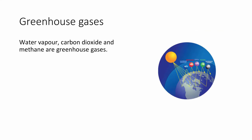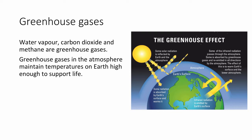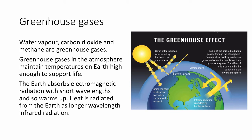Greenhouse gases: water vapour, carbon dioxide, and methane are all greenhouse gases. Greenhouse gases trap heat within the atmosphere and maintain the temperature on Earth high enough to support life. Without them, the planet would be frozen. The Earth absorbs electromagnetic radiation with short wavelengths, such as visible light, and then re-radiates it as longer wavelength infrared radiation — another name for which is heat. Some of this heat is absorbed by the carbon dioxide and methane in the atmosphere, which traps it and re-radiates it back to Earth, keeping the Earth warm.